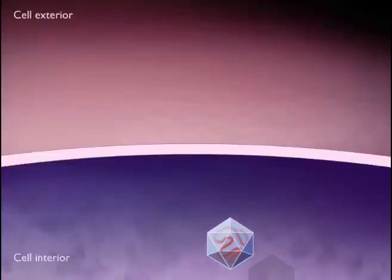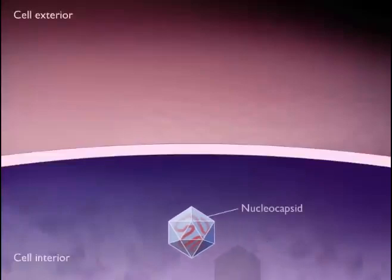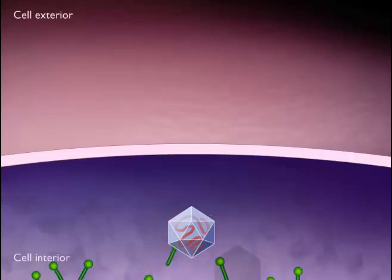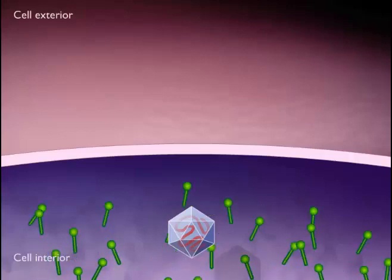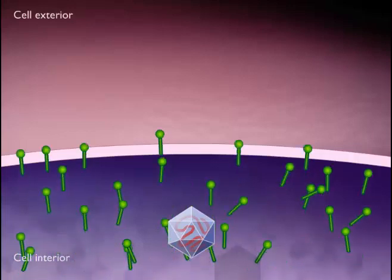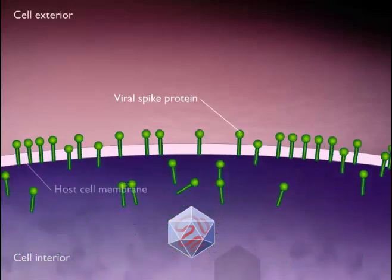Enveloped viruses are usually released from the host cell by a budding mechanism. First, viral spike proteins are inserted into the host cell membrane.